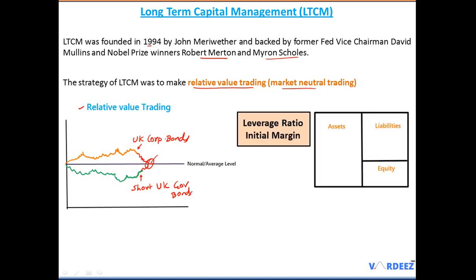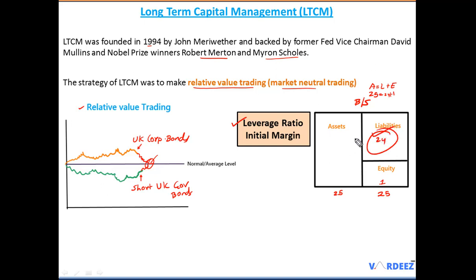To illustrate with a simple hypothetical balance sheet: the mispricings in the market were very small, so to generate large returns, LTCM took high leverage. Their leverage ratio was 25-to-1 — assets equal liabilities plus equity. If assets are 25 and equity is 1, then liabilities are 24. This large liability base allowed them to deploy more capital and capture mispricings at scale.